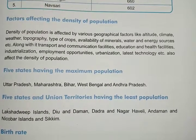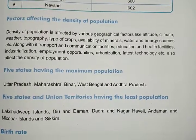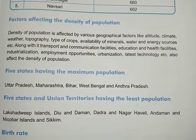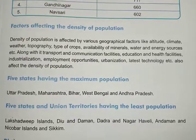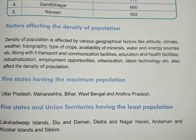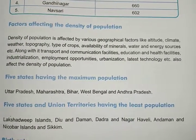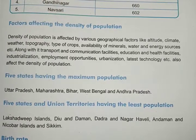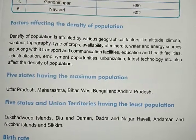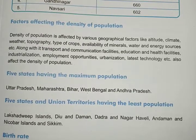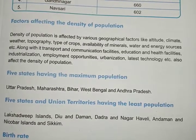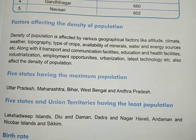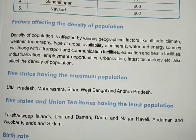The first topic we have to cover is the factors that affect the density of population. I hope you remember what the density of population was. Density of population means the average number of persons that live per square kilometer, and that is termed as density of population.